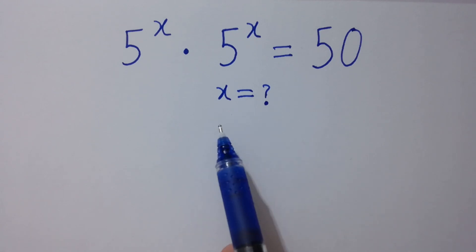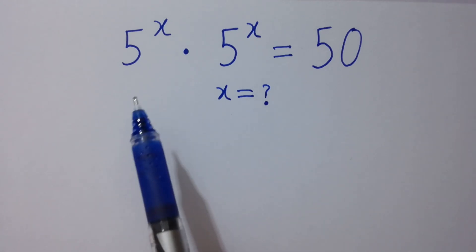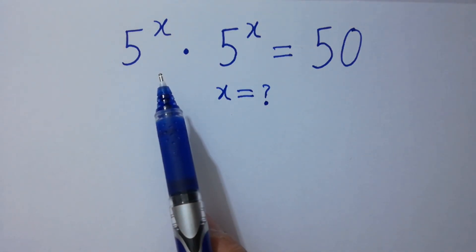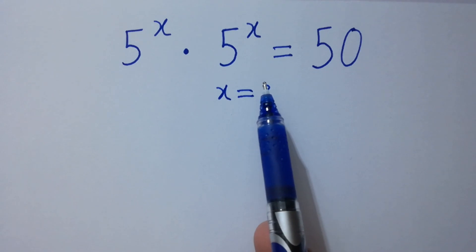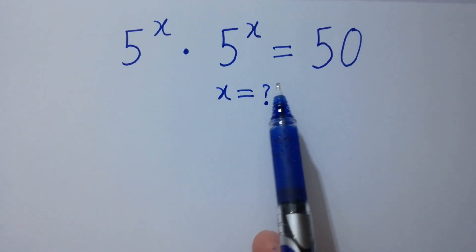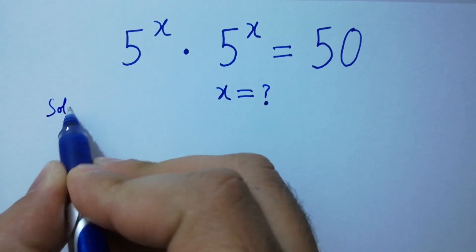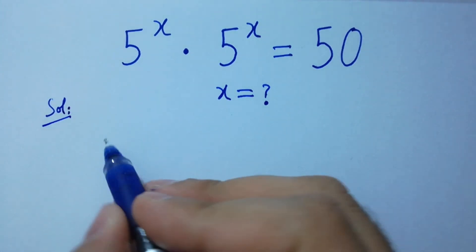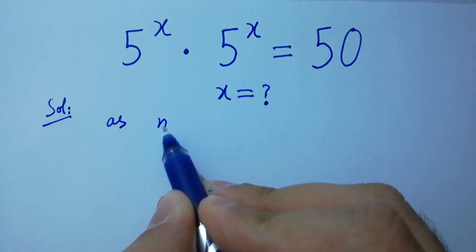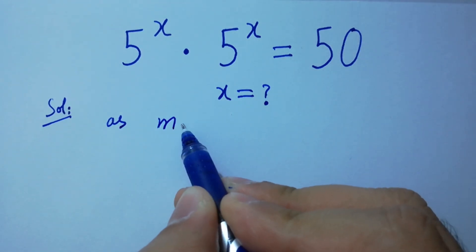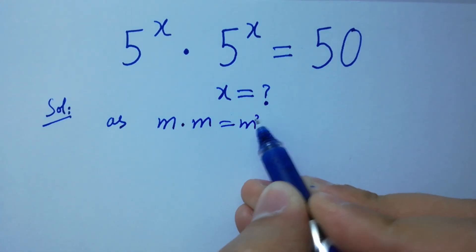Hello friends, find the value of x if 5 to the power x times 5 to the power x equals 50. Let's have a solution here. As we know, m times m equals m squared.